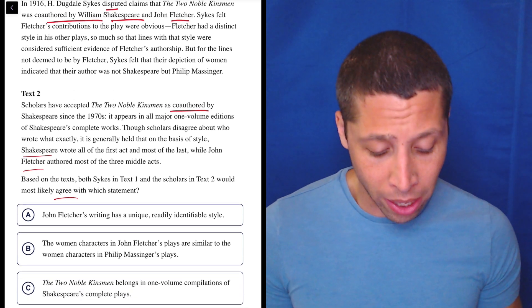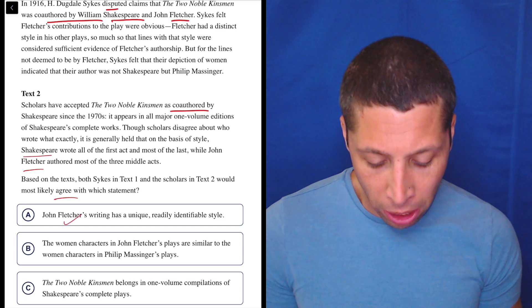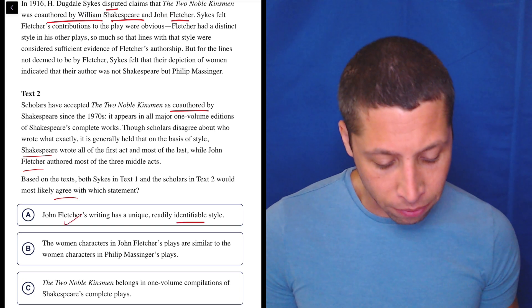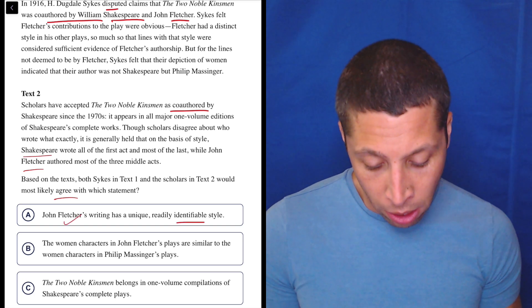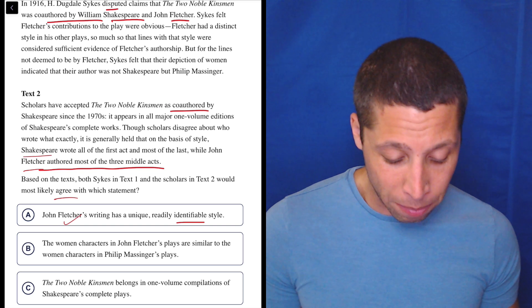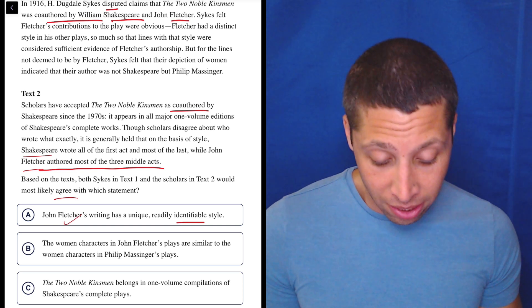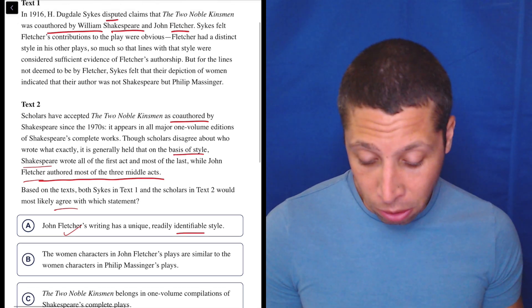Choice A: John Fletcher's writing has a unique, readily identifiable style. Well, they both talk about Fletcher. Is it identifiable? That's a pretty strong word there. Fletcher authored most of the three middle acts, I guess. I mean, it's based on his style, so maybe that's something.